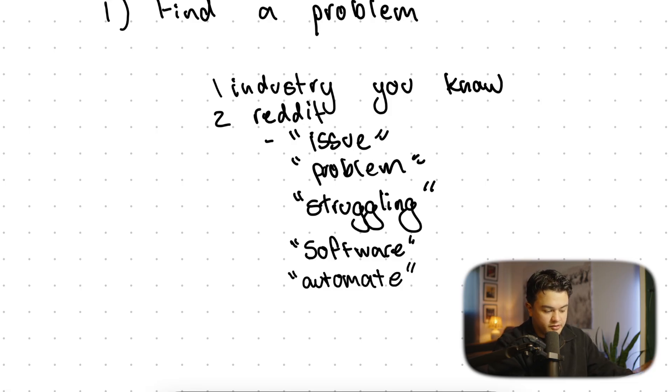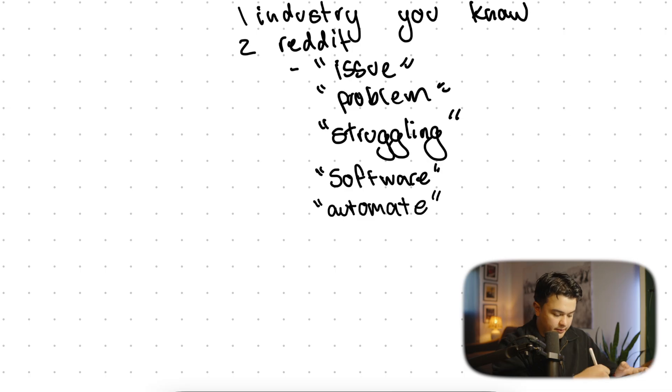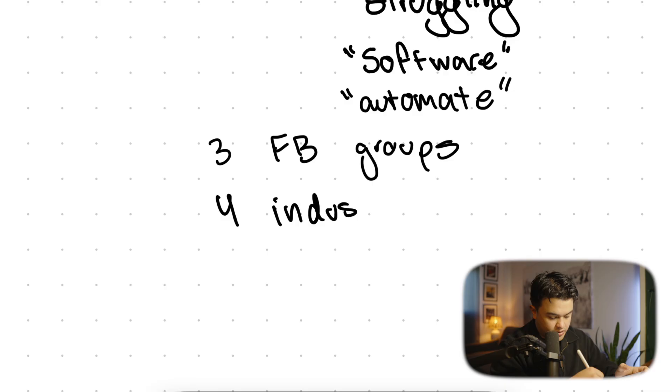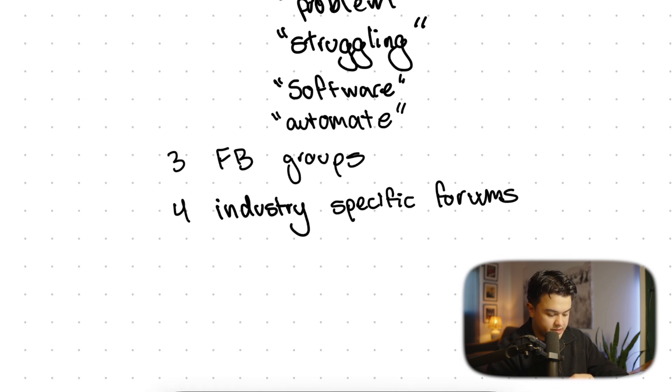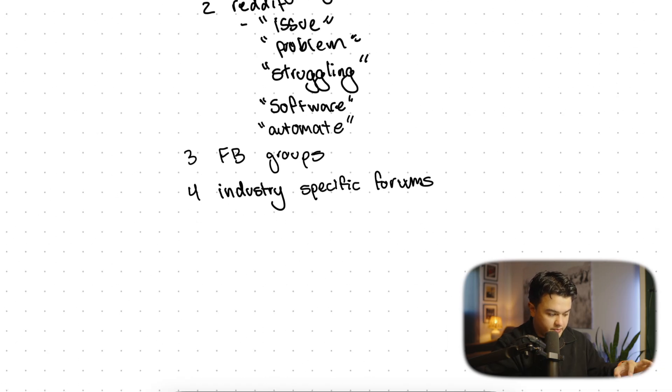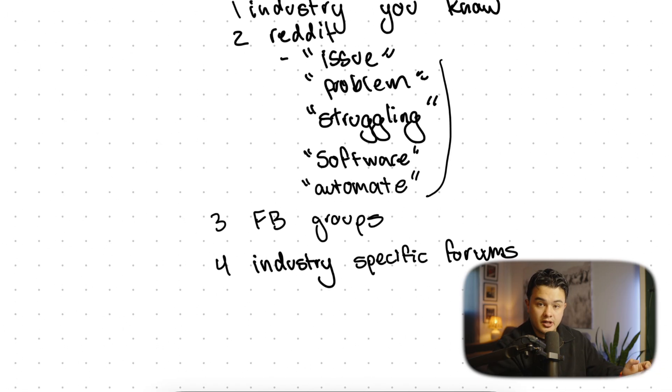That's why Claude Code is such a massive opportunity right now, because anybody can build a niche software when before it wasn't possible or maybe not feasible. Another great platform is Facebook groups. I prefer Reddit a little bit better or industry specific forums. There's a forum out there for pretty much anything. You're searching for these same keywords to find the exact problem to build an offer for.